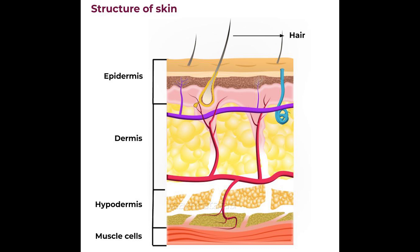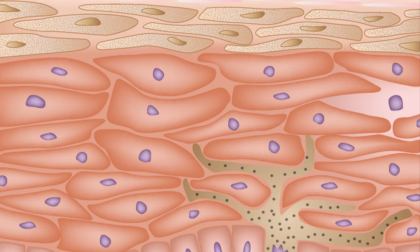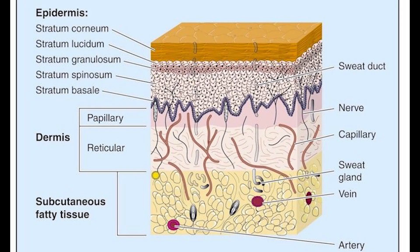The dermis is the layer of skin beneath the epidermis that consists of connective tissue and cushions the body from stress and strain. It provides tensile strength and elasticity through an extracellular matrix composed of collagen fibrils, microfibrils, and elastic fibers embedded in hyaluronan and proteoglycans. Skin proteoglycans are varied and have specific locations; for example, hyaluronan, versican, and decorin are present throughout the dermis and epidermis extracellular matrix, whereas biglycan and perlecan are only found in the epidermis.